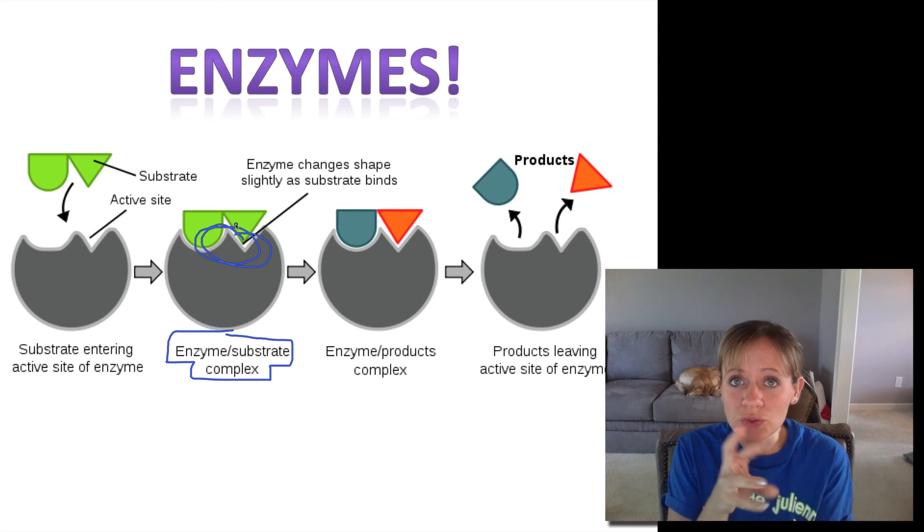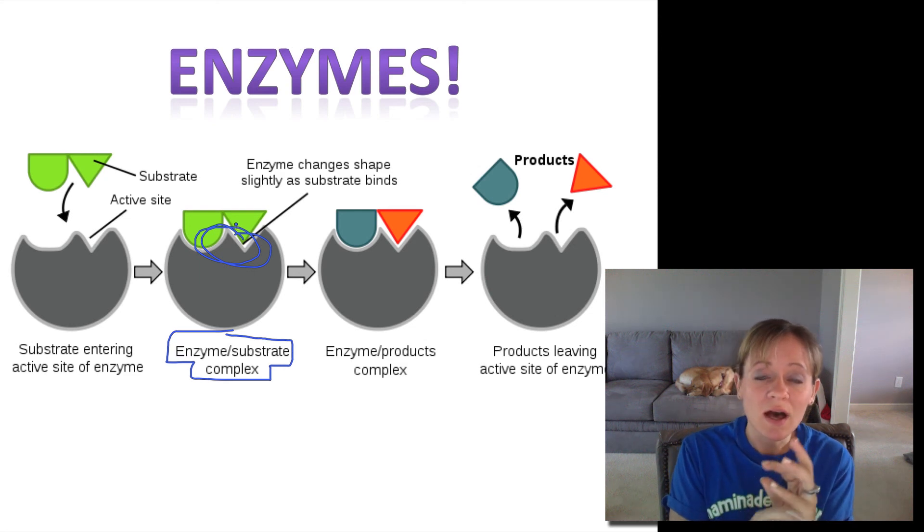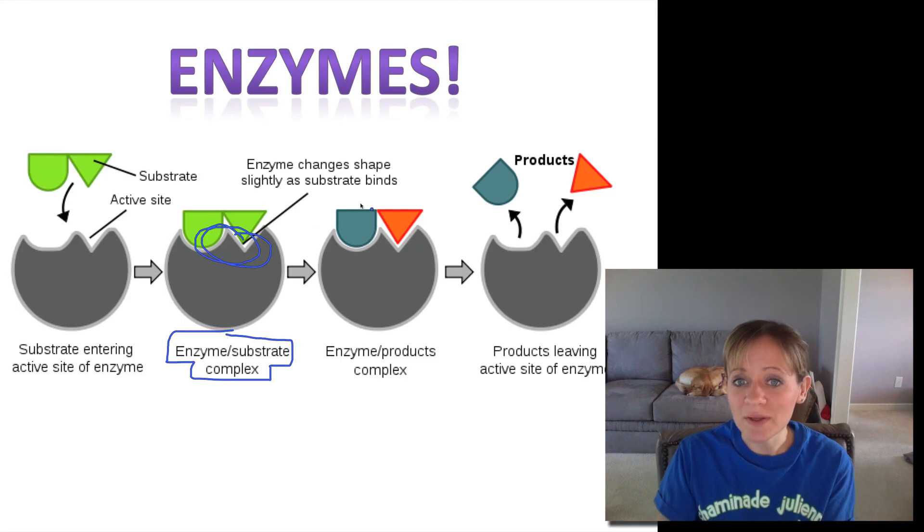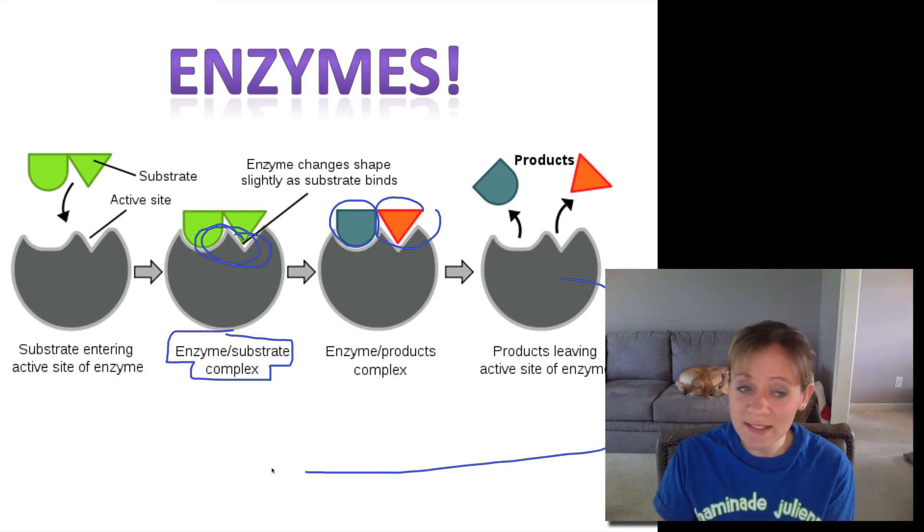Now some interesting things are going to happen at this little active site. The enzyme is going to break some bonds, reform bonds, change the reactant. And then what happens is that now we have some products. Now you might have just one product, but in this example that enzyme broke that substrate into two different products. And so now we call this the enzyme product complex. And then eventually the products are going to leave the active site. And this enzyme is, like I said, ready to be reused again for another reaction.